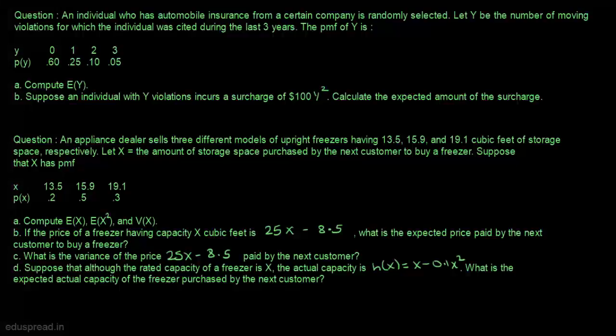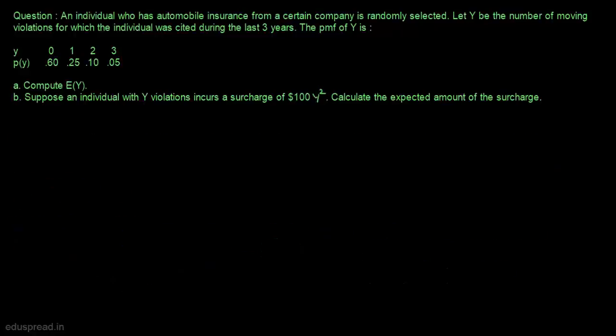In this lecture we are going to solve two questions. An individual who has automobile insurance from a certain company is randomly selected. Let Y be the number of moving violations for which the individual was cited during the last three years. The probability mass function of Y is given, and in part A we have to compute the expected value of Y.